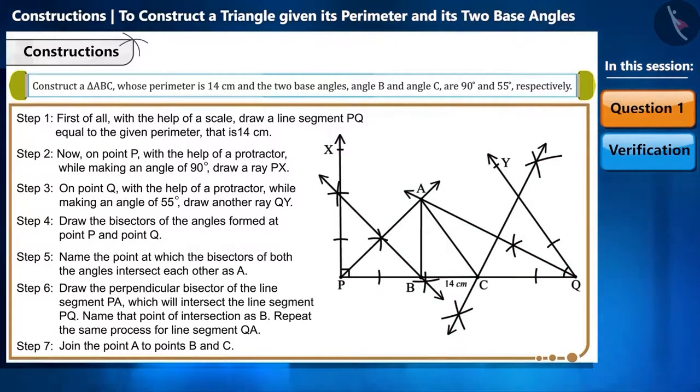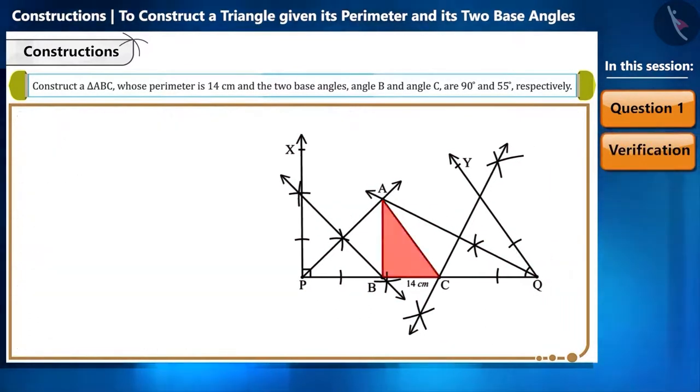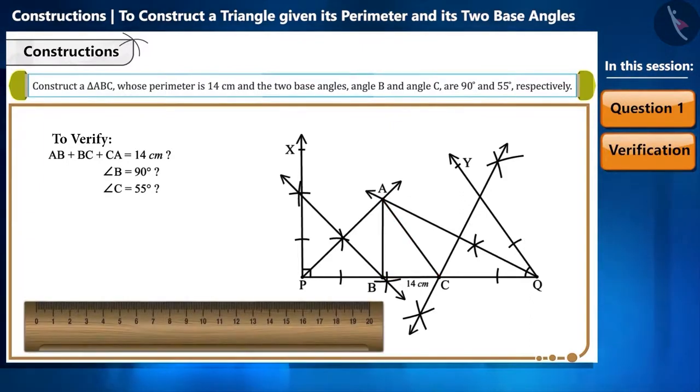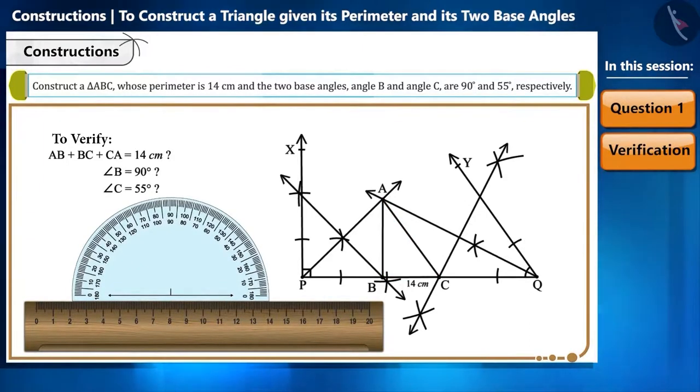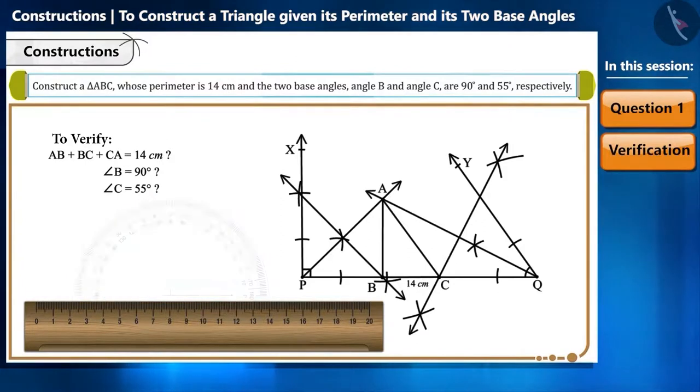Friends, now we will prove this mathematically. The sum of the three sides of the triangle we had to construct is 14 cm. So now we will check whether the sum of the sides of the triangle we constructed is 14 cm, and also whether the measurement of base angles is 90 degrees and 55 degrees or not. We can verify this by measuring these sides and angles with the help of a scale and protractor.